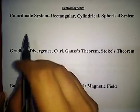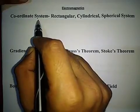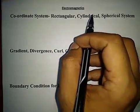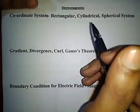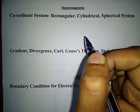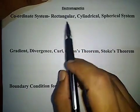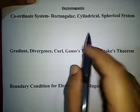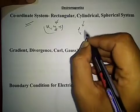In electromagnetics, the very first important topic for exam point of view is coordinate systems. All three types — rectangular, cylindrical, and spherical systems — are important. The rectangular system uses xyz components, cylindrical uses rho, phi, z components, and spherical uses r, theta, phi components.